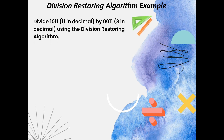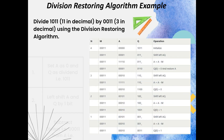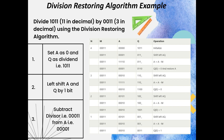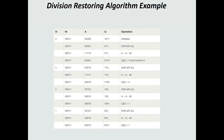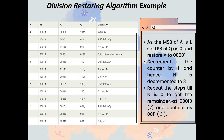Now let's look at an example of the Division Restoring Algorithm. We'll divide 1011 (which is 11 in decimal) by 0011 (which is 3 in decimal). First, set A to 0 and Q as the dividend 1011. Next, shift A and Q by 1 bit. Then subtract the divisor 0011 from A (00001), giving a binary value in A of 11110. As the MSB of A is 1, set the LSB of Q to 0 and restore A to 00001. This restoration step is why the algorithm is called the Division Restoring Algorithm.